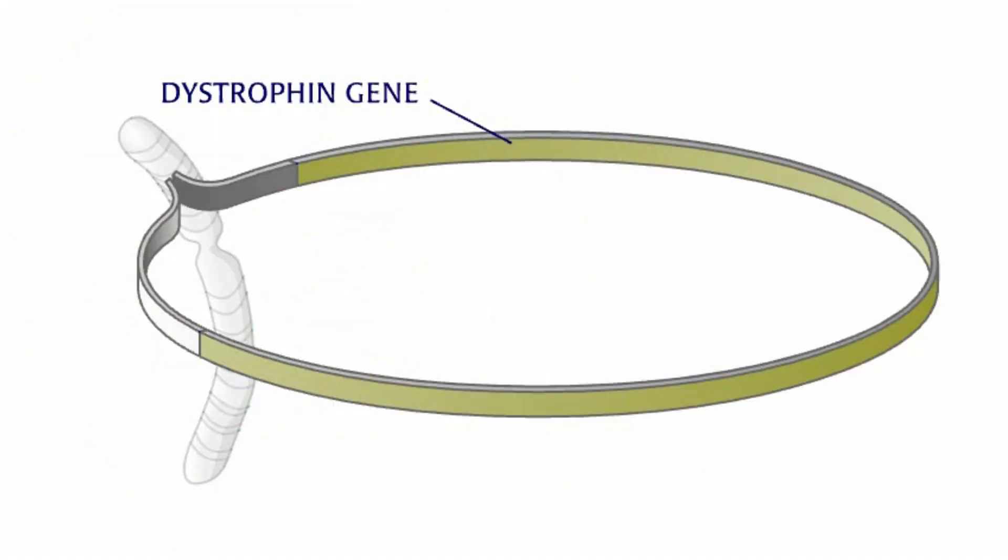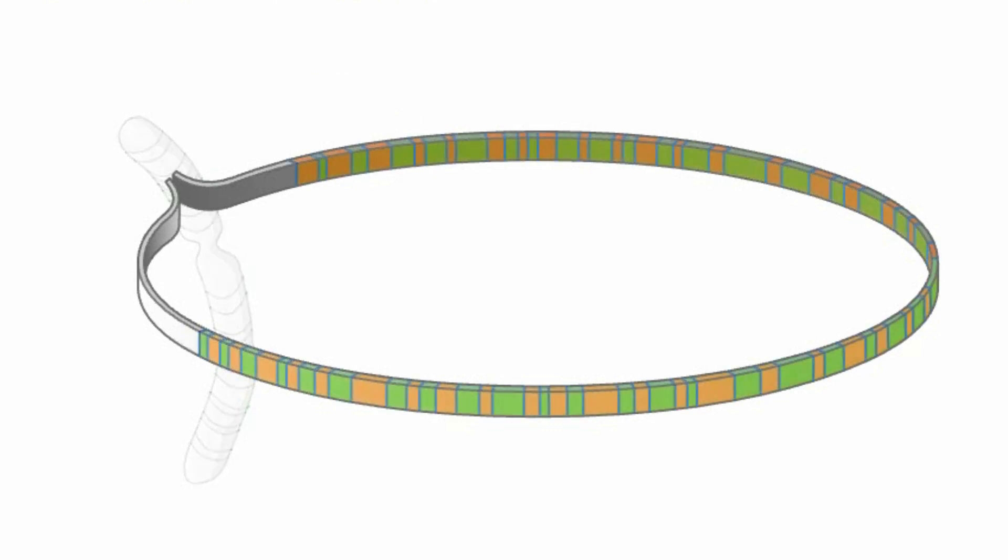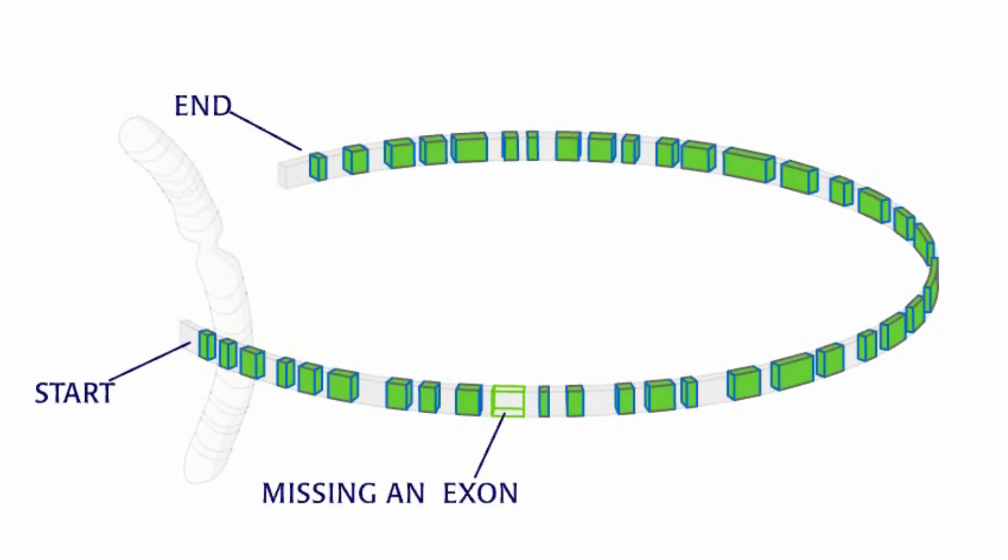Becker muscular dystrophy, or BMD, is a similar disorder that is also caused by a mutation, frequently an exon deletion in the dystrophin gene.